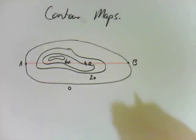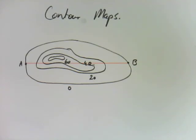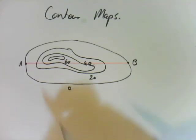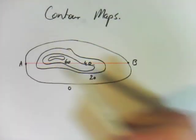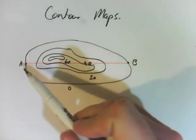Contour maps are possibly the most difficult thing out of chapter 9 because they're so abstract. Question 1 asks you to draw a side profile of what this mountain would look like from A to B.